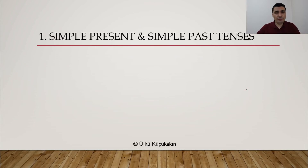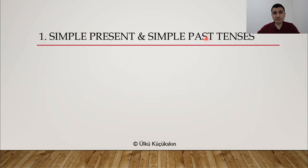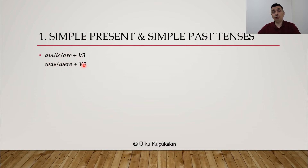Let's talk about specific tenses in detail. How do we form passive voice in simple present tense and simple past tense? It's very, very easy. Like I said, BE verb 3. Here, BE is am/is/are and WAS/WERE, and verb 3 is verb 3. So again, BE is am/is/are and WAS/WERE plus verb 3. Simple present and simple past tenses are formed like this.